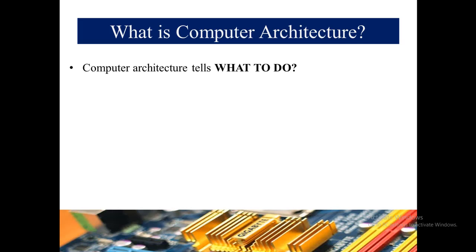Computer architecture tells 'what to do' because it deals with software — software being the commands we give to a computer to perform specific operations. Computer organization, on the other hand, deals with 'how to do' — how the hardware and the computer organization will work to fulfill those commands and operations.